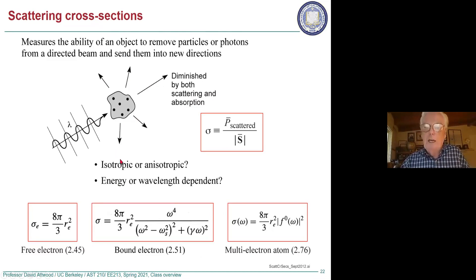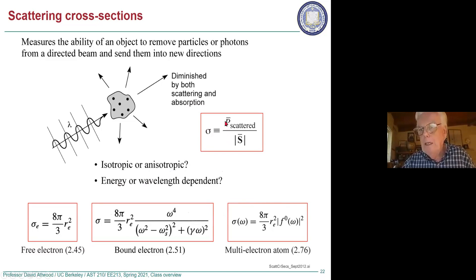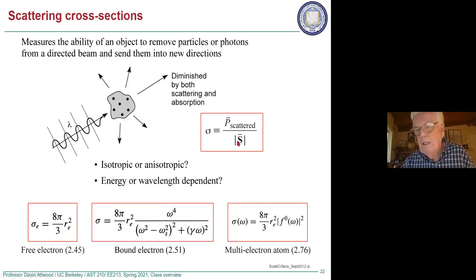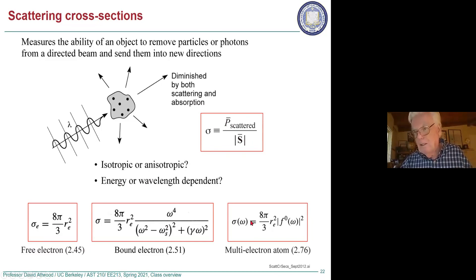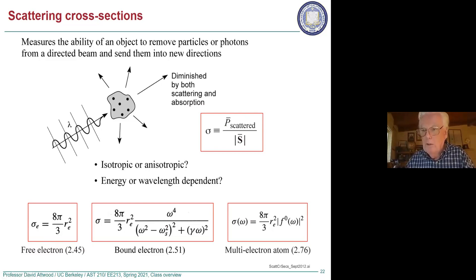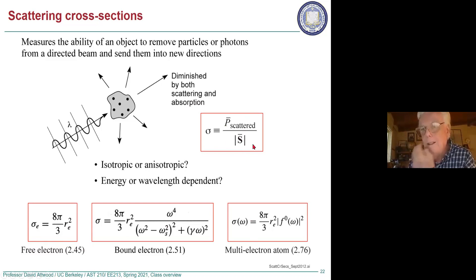We'll ask: is the scattering isotropic in all directions, or does it have angular peaks, and what is the wavelength or energy dependence? We'll define the scattering cross-section as the time-averaged power P̄ divided by the average intensity |S̄|. The bar on top means averaging over many cycles. These are the formulas we'll calculate; we'll have to derive some electromagnetic quantities like where the intensity comes from mathematically.